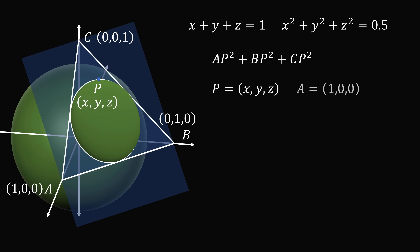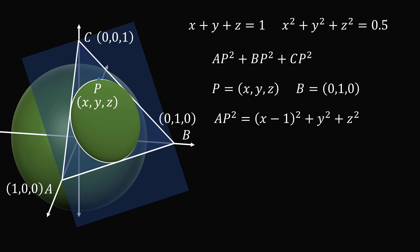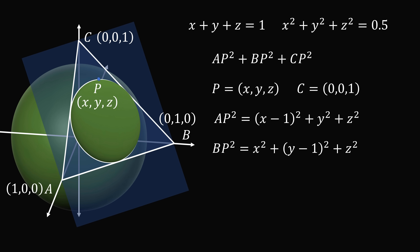If P is (X, Y, Z), we know A is (1, 0, 0). So AP squared equals the square of (X minus 1) plus Y squared plus Z squared. Similarly, B is (0, 1, 0), so BP squared equals X squared plus the square of (Y minus 1) plus Z squared. Next, C is (0, 0, 1), so CP squared equals X squared plus Y squared plus the square of (Z minus 1).